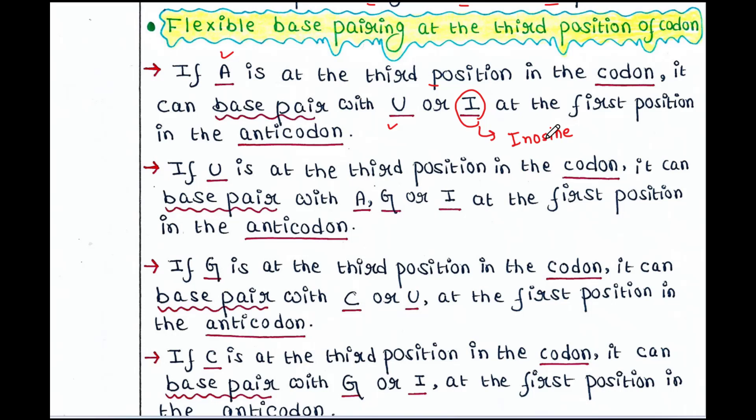I is actually the nucleoside inosine. It is found in tRNA. So, it is formed in tRNA by the removal of an amino group from adenosine. This is carried out by an enzyme called adenosine deaminase.